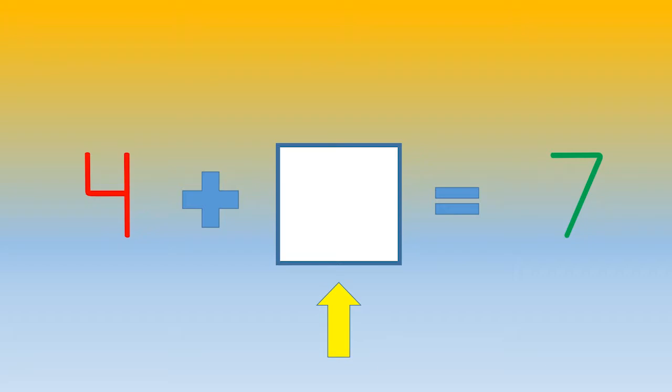The box shows how many more are needed to get to 7. You can start at 4 and count on by drawing dots or tally marks until you reach 7. Like this.